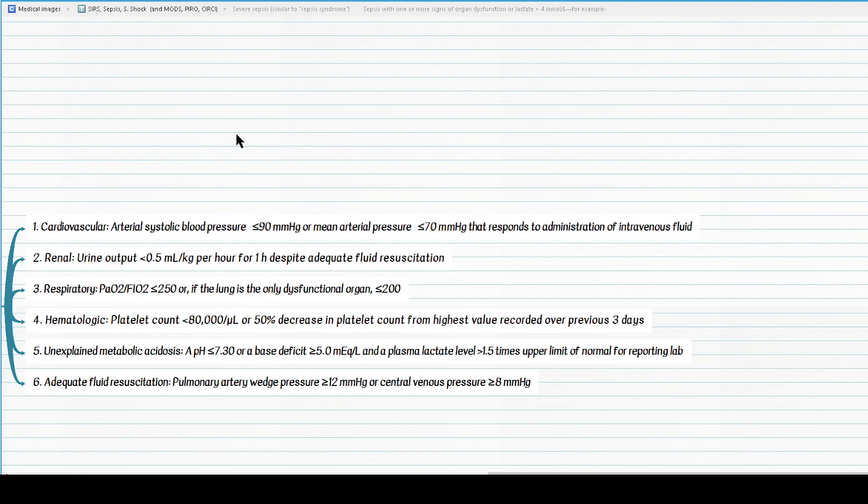However, if there is evidence of acidosis beyond PaCO2 less than 25, for example, if lactate is more than 4 mmHg, and if the patient has clear evidence of hypoxemia, then we can say the patient is in severe sepsis.